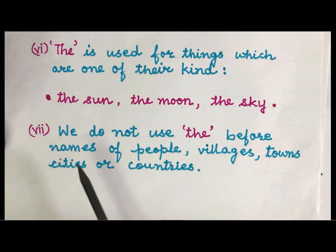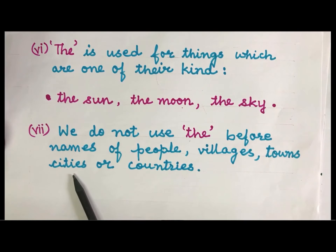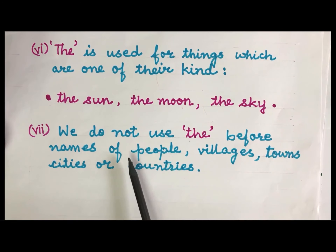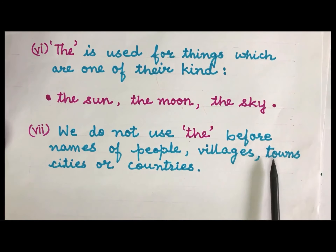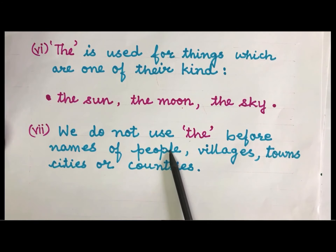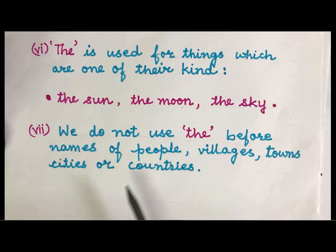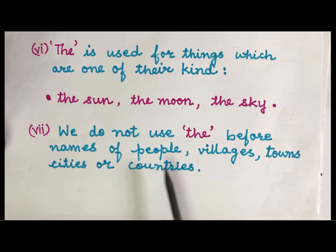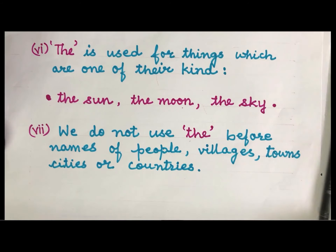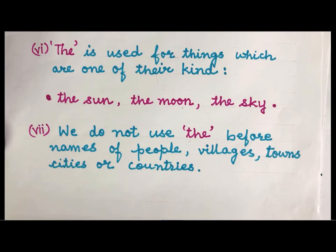We do not use the before the names of people, villages, towns, cities, and countries. This is an important point — we never say the Ram, the India, the America — that is wrong. So we should not use the article the before the names of people, villages, towns, cities, or countries.